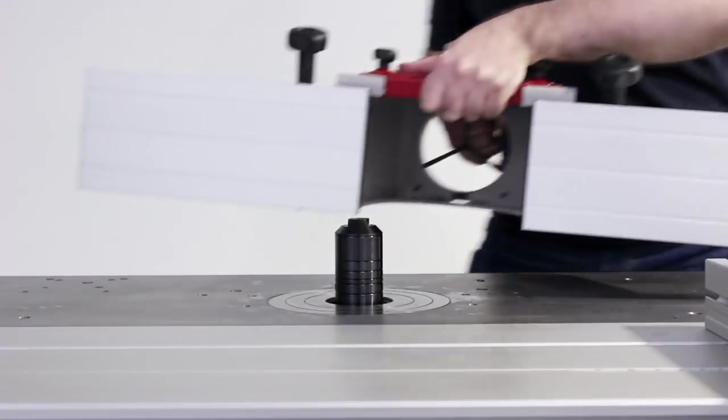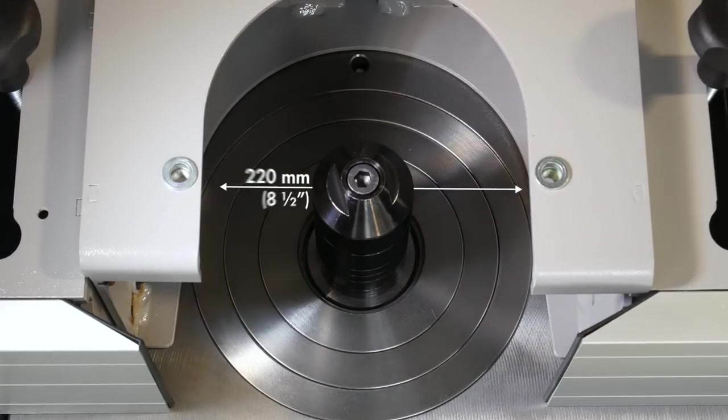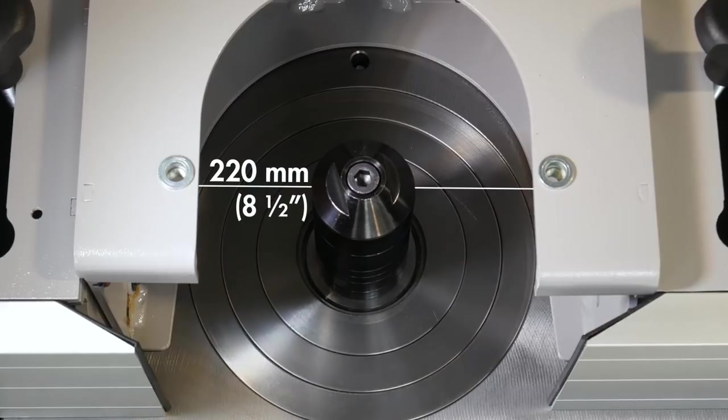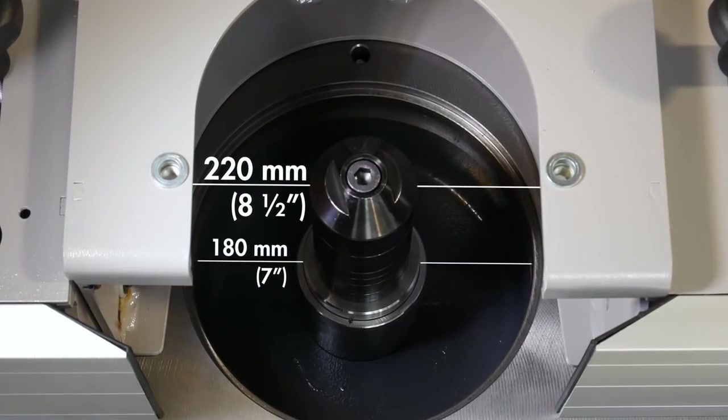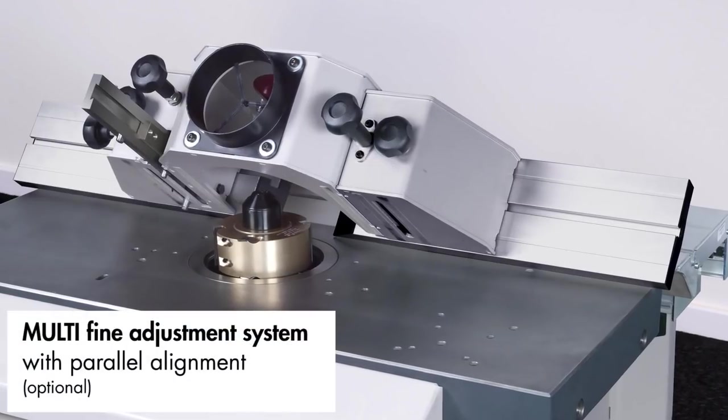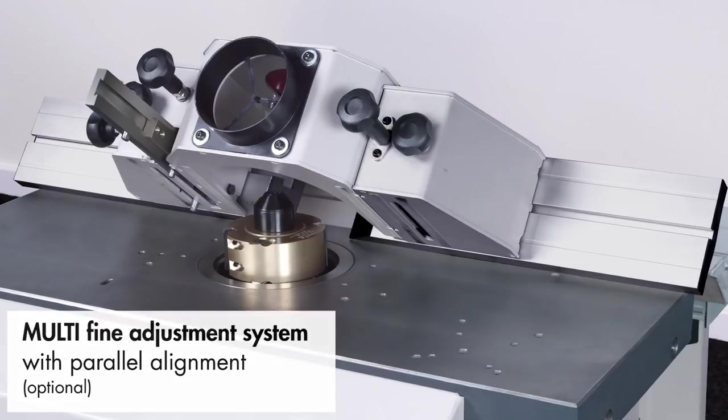The standard spindle fence is easily fitted and removed and provides a maximum tooling diameter of 220 millimeters above the table and 180 millimeters below. Optionally, the multi adjustment system also features pin locating of the fence with measurement scales.